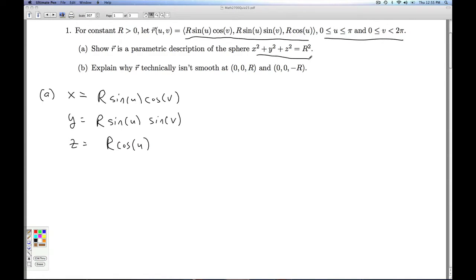To show it's on the sphere x squared plus y squared plus z squared equals r squared, what I need to do is take x squared plus y squared plus z squared and show that that works out to be r squared. So we've seen this a couple times already in class. We substitute for x, y, and z.